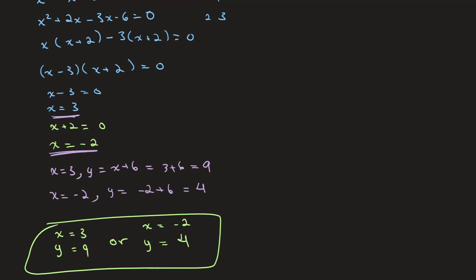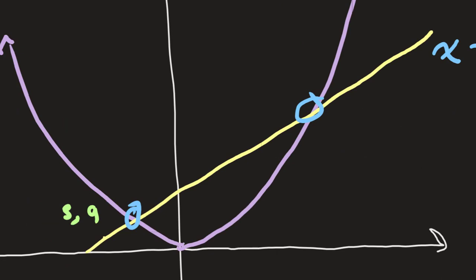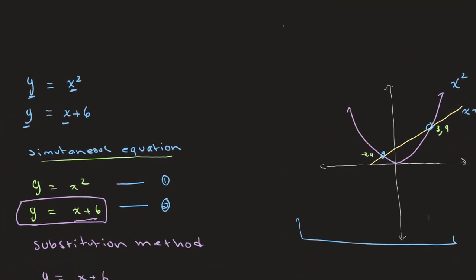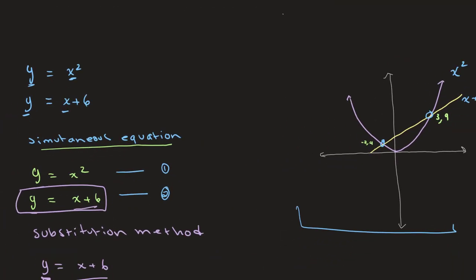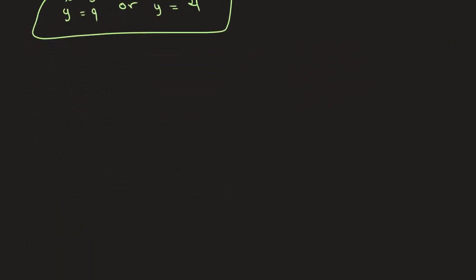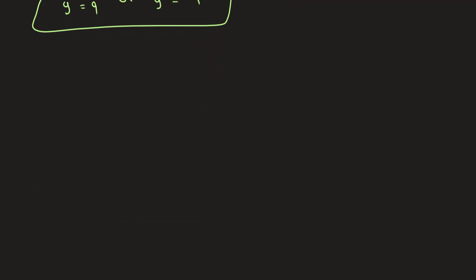Looking back at our graph, these would be our points of intersection: negative 2, 4 and 3, 9. So once again, when solving simultaneous equations with one linear and one nonlinear equation, it's very similar to how we've solved every other simultaneous equation. I'm going to go over another example that is slightly more complicated.